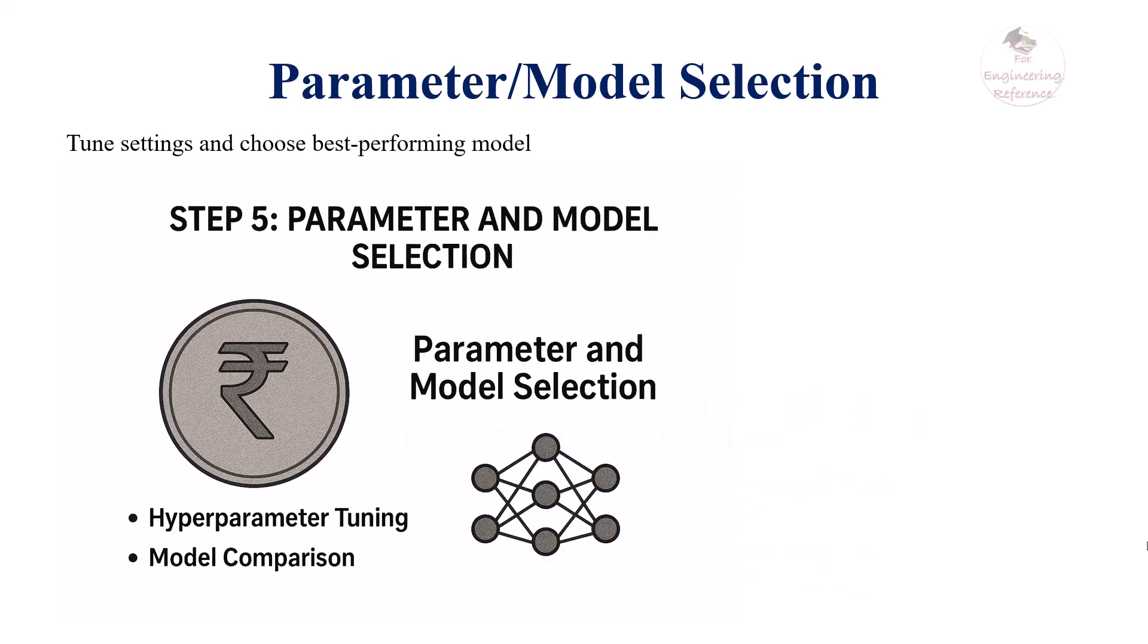Next is parameter and model selection. Every algorithm has its settings, called hyperparameters, which influence its learning process. We tune these parameters, for instance the number of layers in a neural network, through experimentation or automated techniques to find the best configuration.